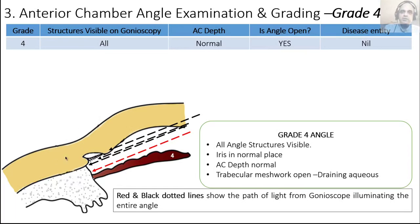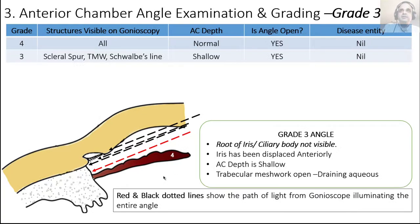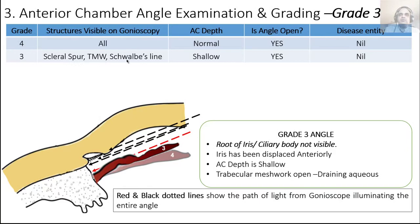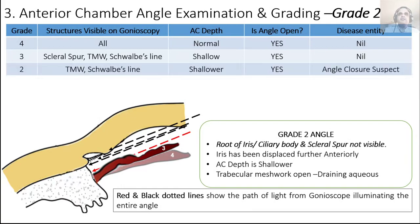As we displace the iris anteriorly a little, it blocks light rays going towards the ciliary body band — you now see only three structures: scleral spur, trabecular meshwork, and Schwalbe's line. The anterior chamber depth is shallower than before. This is a grade 3 angle. It's still open because the trabecular meshwork is still viewable and still functioning, moving aqueous out of the eye.